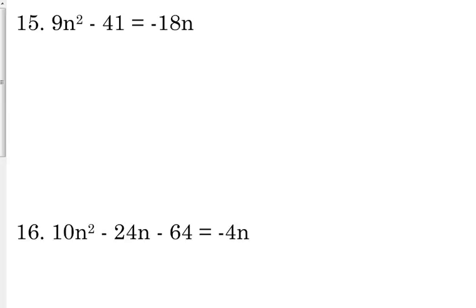We've got 9n squared minus 41 is equal to negative 18n. So we're going to solve this by completing the square. We've got to make sure our variables are on the left side, our constants are on the right side. So that means we've got to add the 41 to both sides, and we need to add the 18n because we want the variables on the left side. So on the left side, we have 9n squared plus 18n is equal to 41.